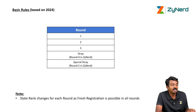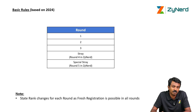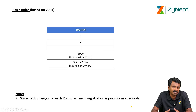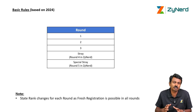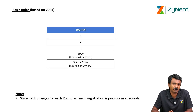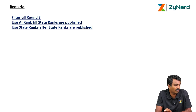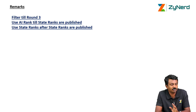Minority quota seats are only available at Al-Falah. There were five rounds in Haryana last year. Till round 3, candidates were able to upgrade — round 3 had a reduction in cutoff. Stray round was run after round 3 and special stray was run after round 4; in Zainert you will see them as round 4 and round 5. State rank changes every round because a fresh merit list is prepared. Use All India rank until state ranks are published, then switch to state ranks. Filter till round 3 for safer predictions; check stray rounds only for riskier possibilities.